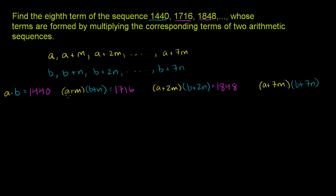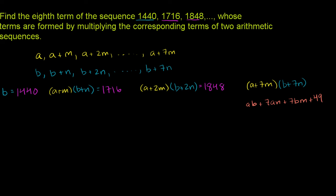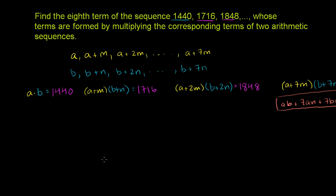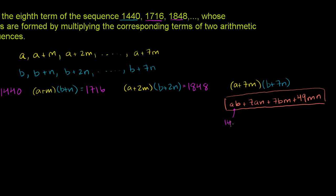Before proceeding, let's think about the form this will take. The eighth term is a plus 7m times b plus 7n. Multiplying those two binomials out gives: ab plus 7an plus 7bm plus 49mn. We need to find the value of this expression. We already know ab equals 1440, so that term is already solved.